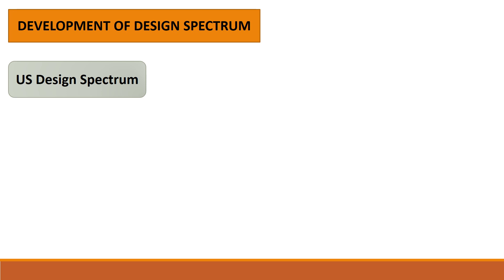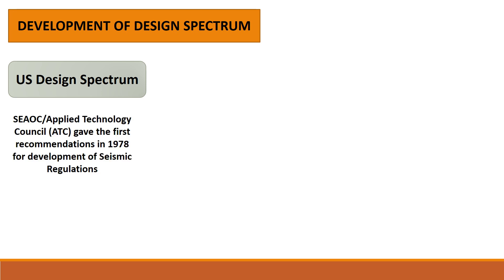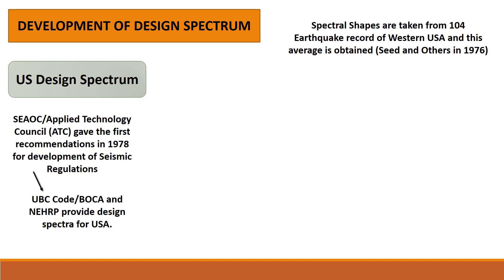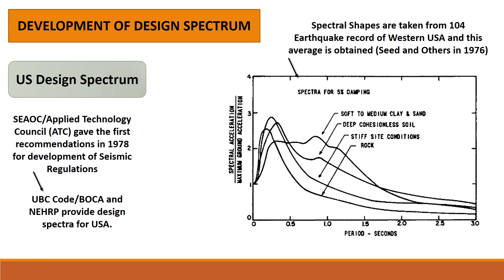Looking briefly into history, it was the Applied Technology Council report in USA in 1978 that paved the way for the development of seismic regulations. This report was followed by the Universal Building Code and other building codes in the USA. Spectral shapes were taken from around 104 earthquake records of Western USA and an average graph for spectra was obtained for different time periods of structures.